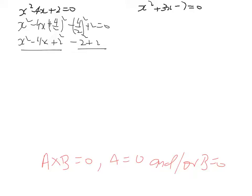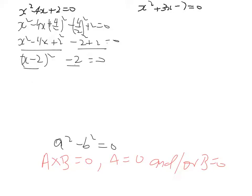Now because we've got that, this will make it easier to work with. We've got x minus 2, all squared, and then minus 2, and that still equals 0. Now we can apply a difference of two squares: a squared minus b squared equals 0, where this is our a term and that's our b term. We've got to find the square root first, so this becomes (x minus 2) squared minus (square root of 2) squared, and that still equals 0.